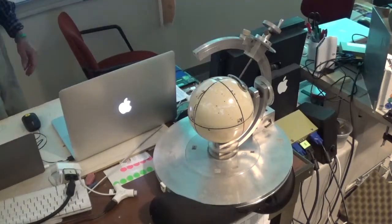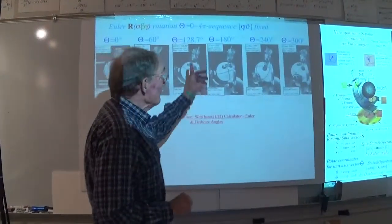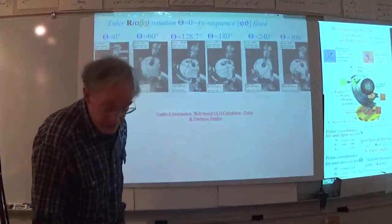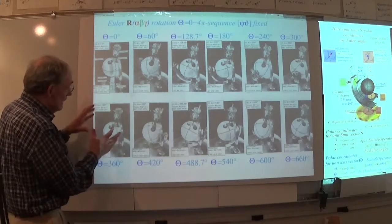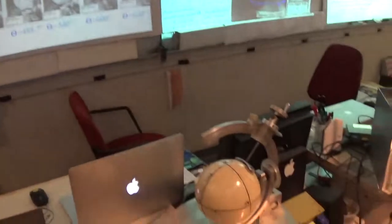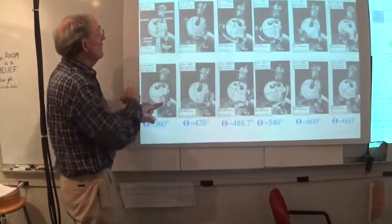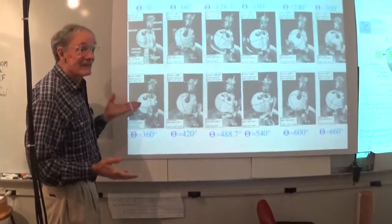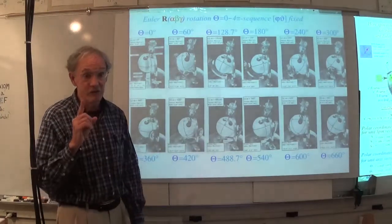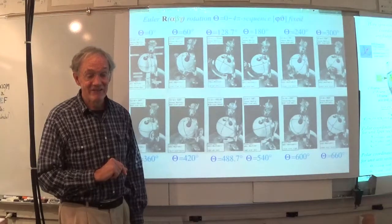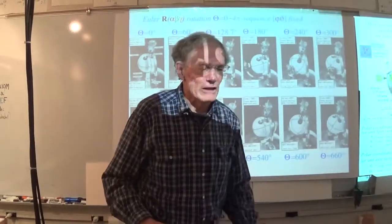This is the ball back in line with the three-dimensional universe, but look—the beta dial is now on the other side. We're only halfway. I've got to go 720 degrees—twice 360, four pi—to get all the way back. This machine really shows in grizzly detail this 2-to-1 business.